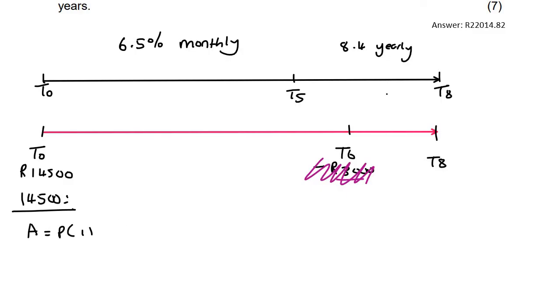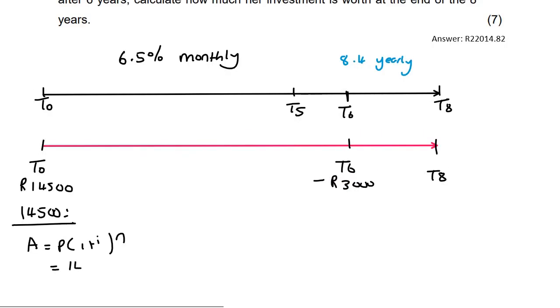So I'm just going to say here, we're busy with the 14,500 now. So I use this formula, the normal compound interest formula. And so that'll just be 14,500, and then we've got to look at all the different interest rates.